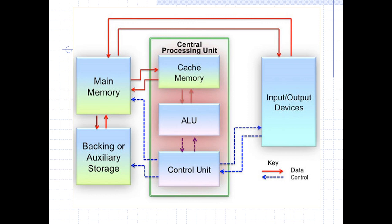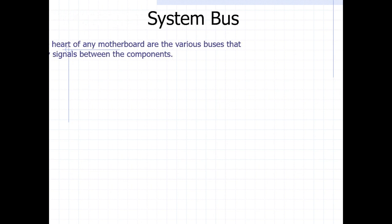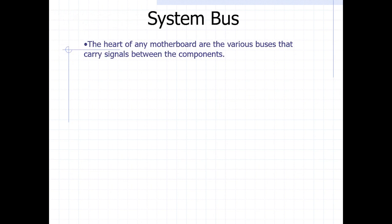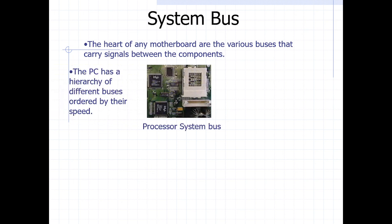Ideally, this represents how the processor functions — this could represent the processor bus, showing how the processor fetches data from the main memory, coordinates instructions from input devices, and how output devices receive signals. Talking about the system bus, the system bus is actually the heart of the motherboard that allows the various components to send signals between themselves.